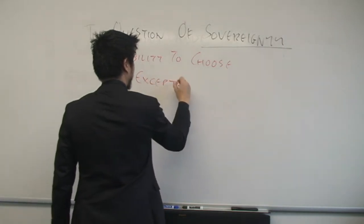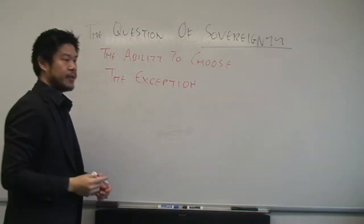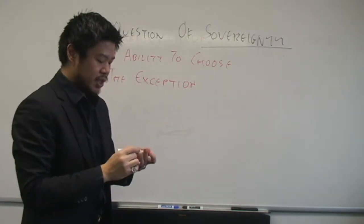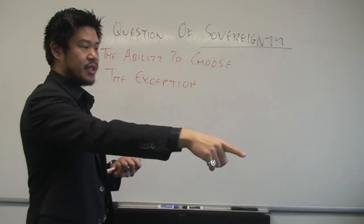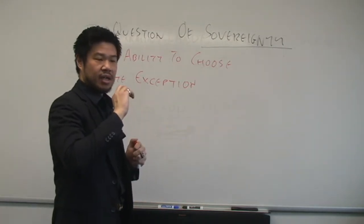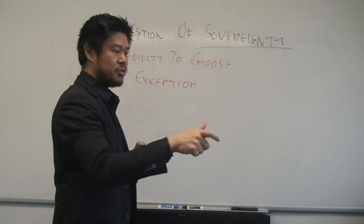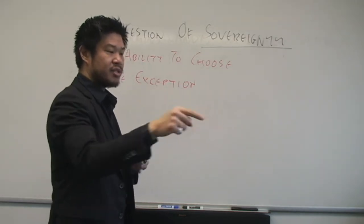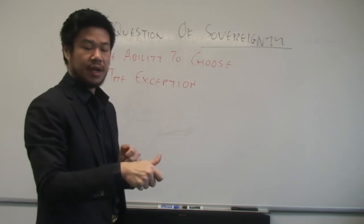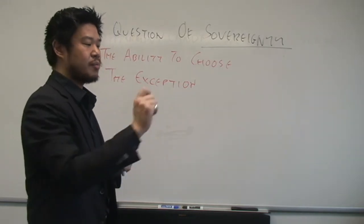So the sovereign, or sovereignty, is the ability to choose the exception. If we go to the monarch or the king, if you have all the subjects and the monarch says that that subject deserves to die, he is making an exception, or choosing the exception amongst his subjects, the exception being death within life. Everyone else gets to live, but you get to die.